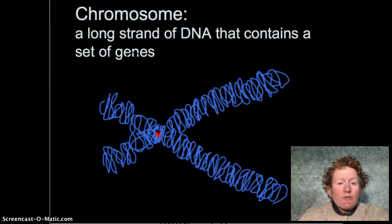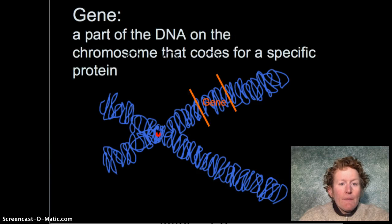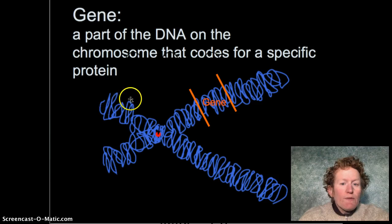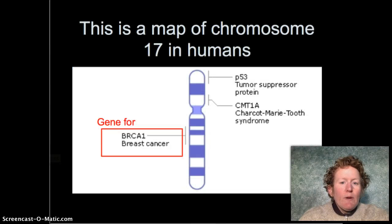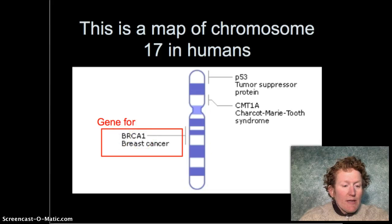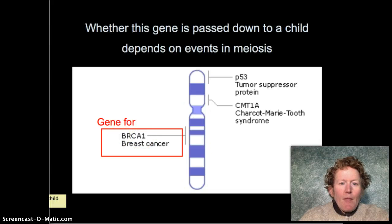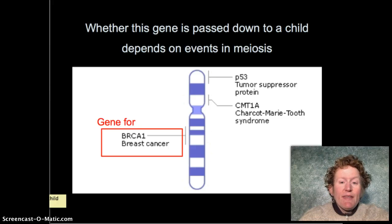A chromosome is a long strand of DNA that contains a set of genes. The part of the DNA on a chromosome that codes for a specific protein is a gene. There are genes at specific places all along a chromosome. If we look at human chromosome number 17, we know some of the genes on it, and one of them may cause breast cancer. Whether this gene is passed down to a child depends on the events in meiosis, so we're going to talk more about meiosis.